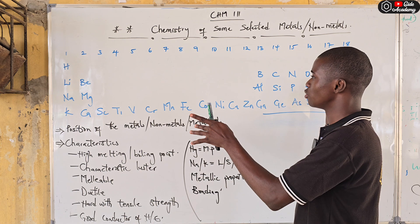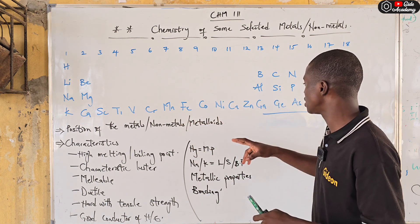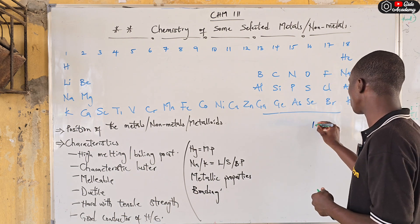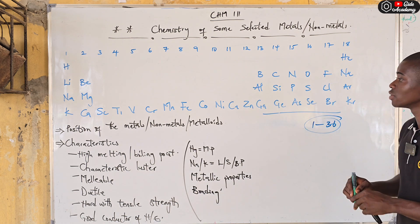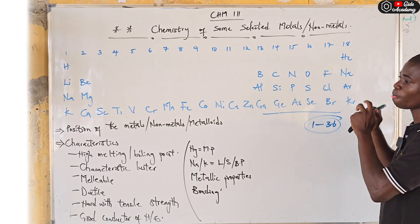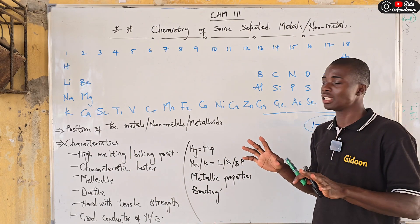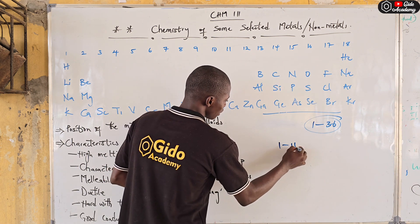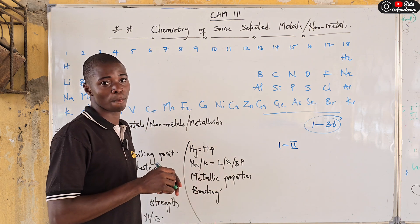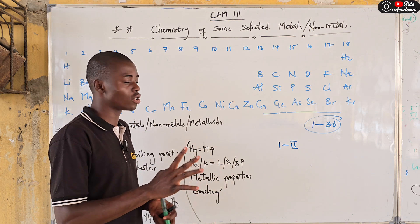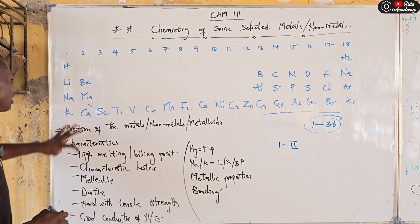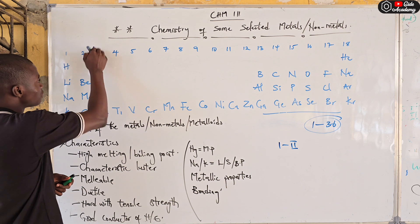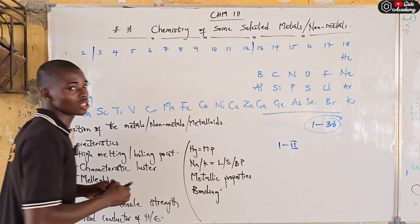If you look at the periodic table, the first 36 elements are shown here. How do we identify metals in the periodic table? Group one elements and group two elements are majorly metals. I'm talking about group one elements here and group two elements — they are usually metals.